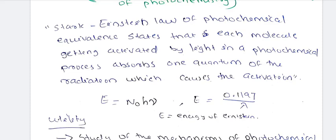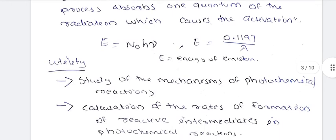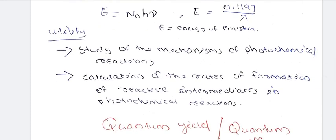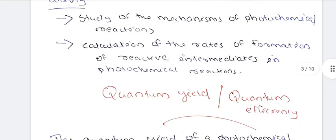Each molecule gets absorbed by light and enters an excited state. When they get into that excited state, one quantum of energy is absorbed. The equation is E = N0hν, where E is energy of Einstein. The utility is to study the mechanism of photochemical reactions and calculation of the rate of formation of reactive intermediates in photochemical reactions.